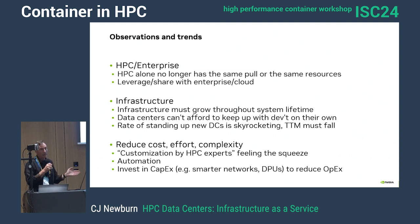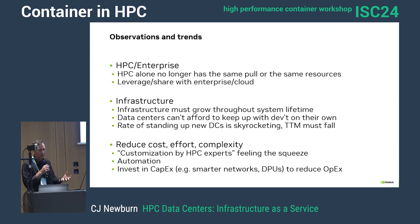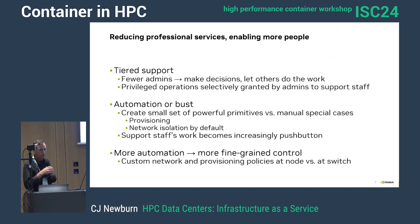That infrastructure in any HPC center needs to grow and change over its lifetime, and data centers can't keep up on their own. The rate of new data centers being stood up — those that would be in the top 50 — used to be one or two a year, and now it's many. We just can't sustain that without something else. We have to reduce cost, effort, and complexity. We need automation and more investment in CapEx to reduce OpEx — the operational expenditures. Smarter networks and DPUs can help.